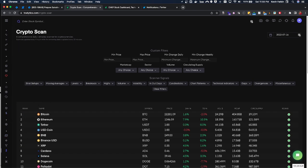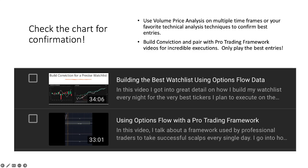There are a lot of scan options, and I want to emphasize — once you find these plays, do not jump in without first building conviction. Once you've built conviction, check out the 'Using Options Flow with the Pro Trading Framework' video on executing these plays. If you have a watch list of 15 tickers, try to narrow it down to only the best of the best. I hope you learned something useful here. If you have any questions, feel free to reach out in the Tradetics Discord or in the comments. Thanks for watching.